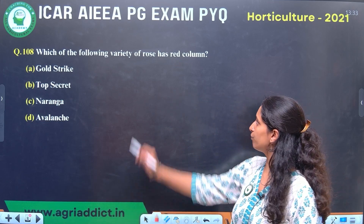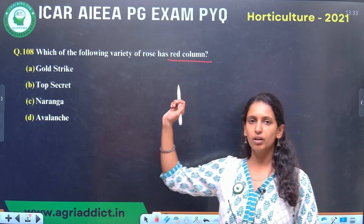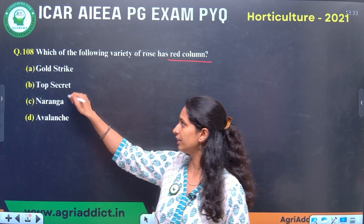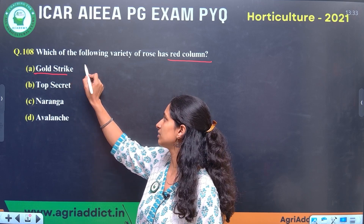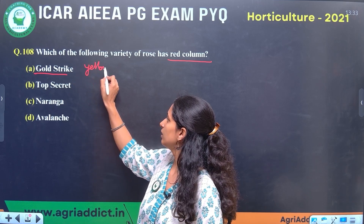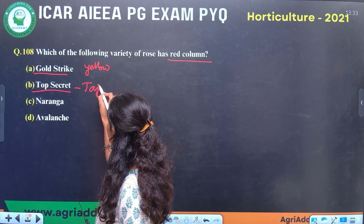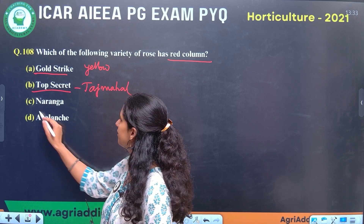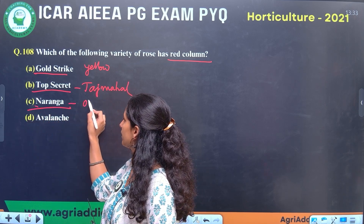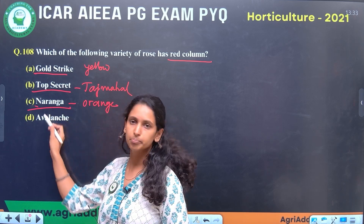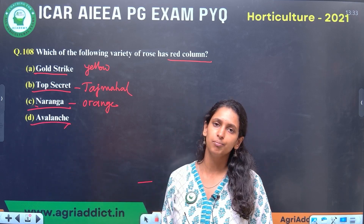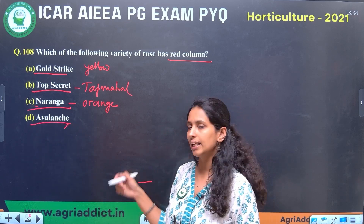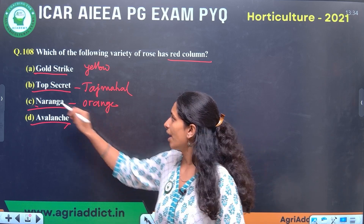Next question: which of the following variety of rose has red colour? Gold Strike is yellow, so that can be eliminated. Top Secret is a very famous variety — in India it is also known as Taj Mahal — and it is red. Naranga has orange colour, similar to Narangi Gainda in marigold. Avalanche is a private sector variety having different shades like pink, white, and greenish colour. So the answer is Top Secret.